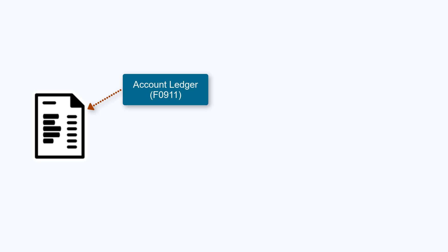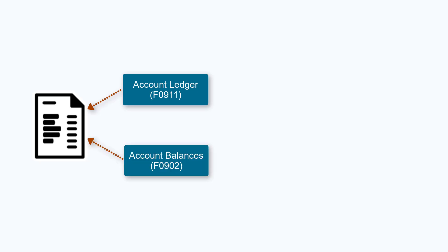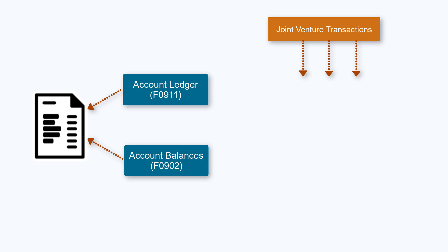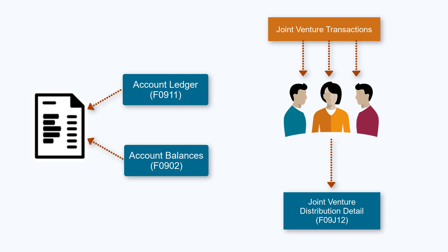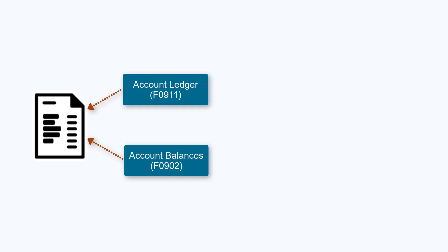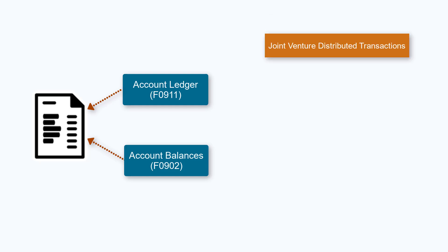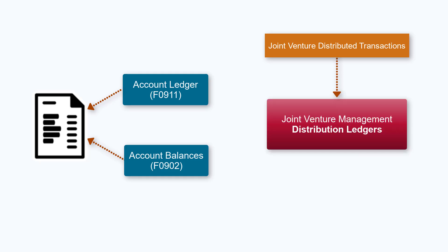Standard financial reporting and statements are based on the account ledger table F0911 and the account balances table F0902. The transactions distributed to the joint venture partners reside only in the joint venture distribution detail table F09J12 and do not exist in the F0911 and F0902 tables. To report on the distributed transactions, you can use the distribution ledger functionality provided in the joint venture management system.